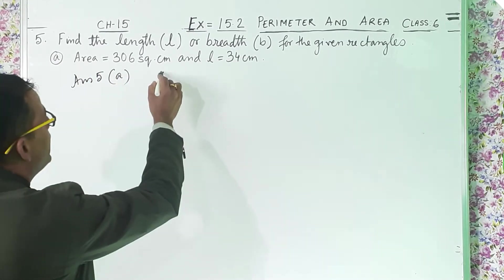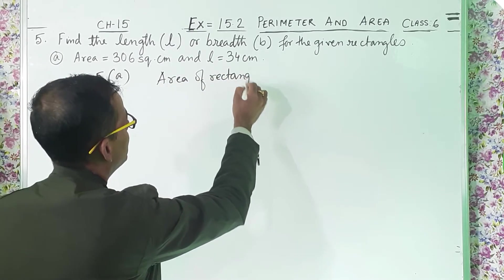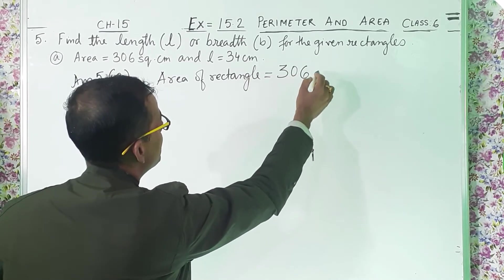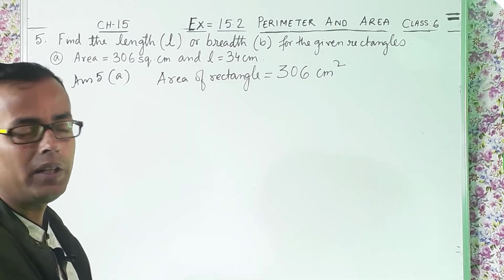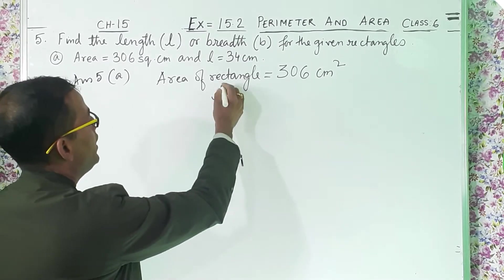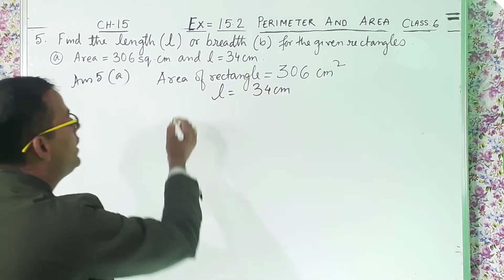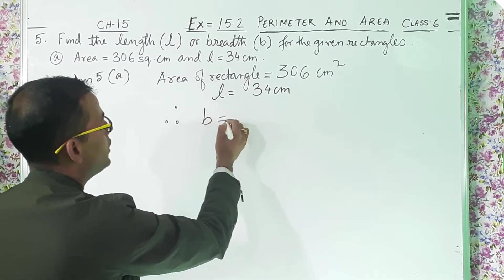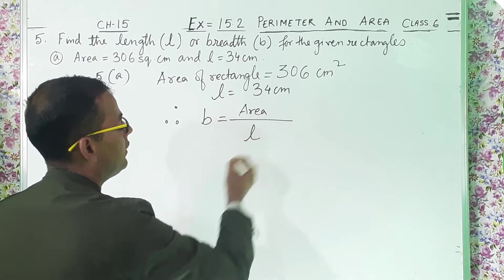Area of rectangle equals 306 centimeter square. I prefer centimeter square; if you do not want to write it that way, you can write square centimeter also. Now L equals 34 centimeters. Therefore, I am going to find out breadth. Breadth equals the formula: area divided by length.